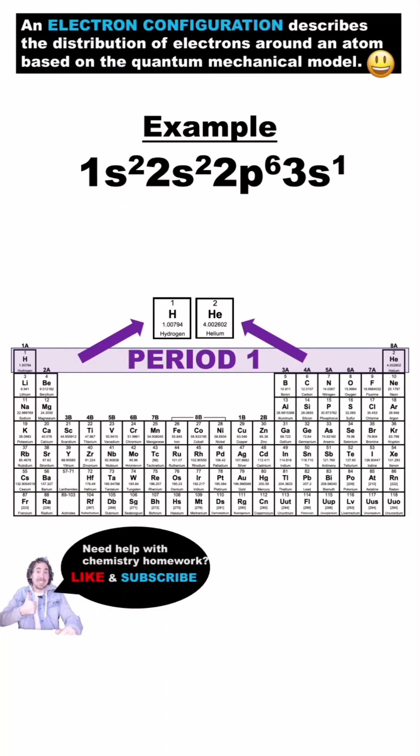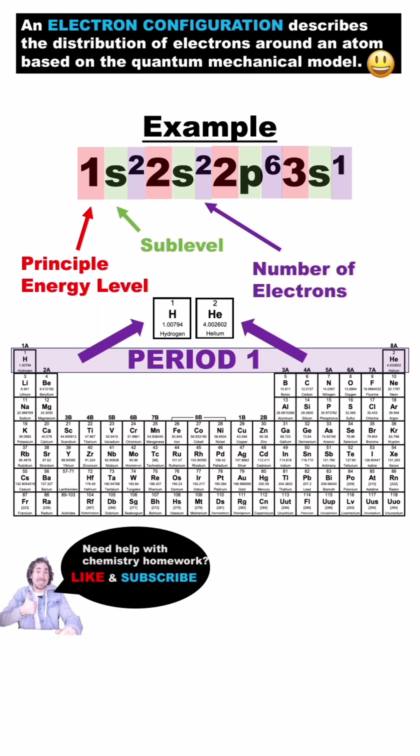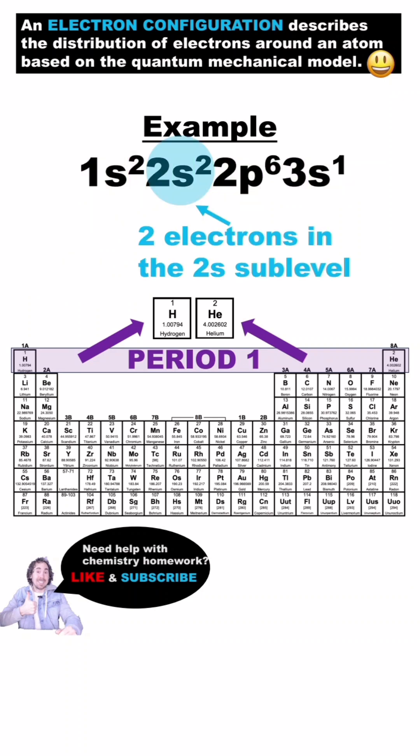The electron configuration for an element shows how electrons are distributed in the atomic orbitals. The large number indicates the principal energy level, the letter is the sublevel, and the superscript number is how many electrons occupy that sublevel. So this is saying that there are two electrons in the 2s sublevel.